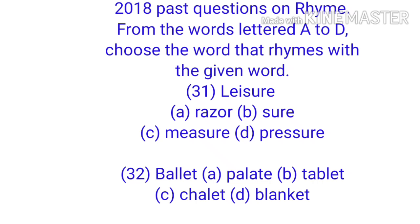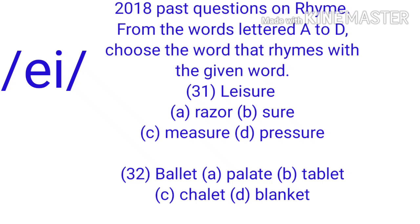Now let's look at question 32. The given word is 'ballet'. Option A: palette, B: tablet, C: chalet, D: blanket. The correct answer is option C. The T in 'ballet' is silent, just like the T in 'chalet'. So the last syllables are both pronounced 'AY'. Ballet, chalet — unlike the rest, where the T is pronounced. So the given word rhymes with option C.